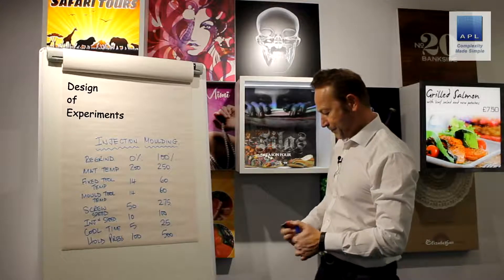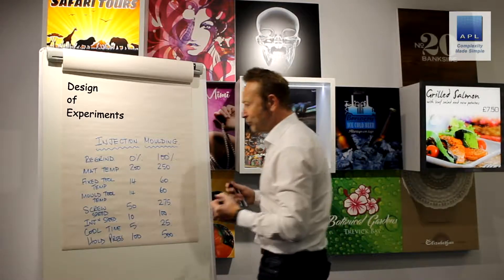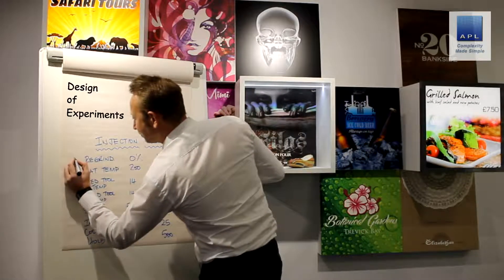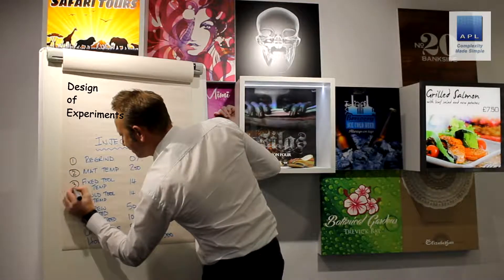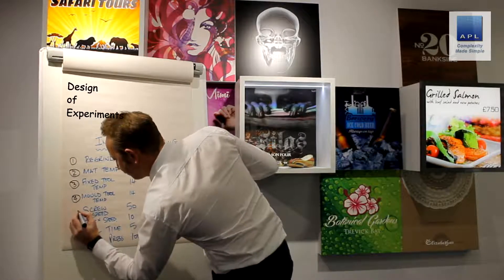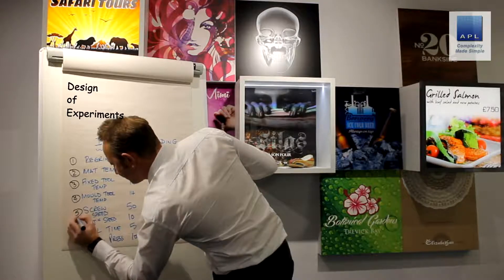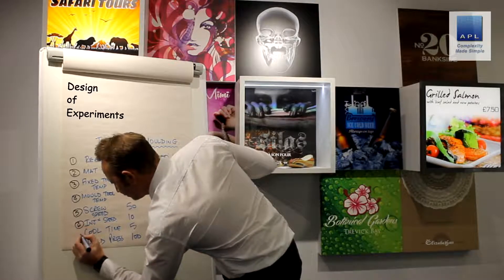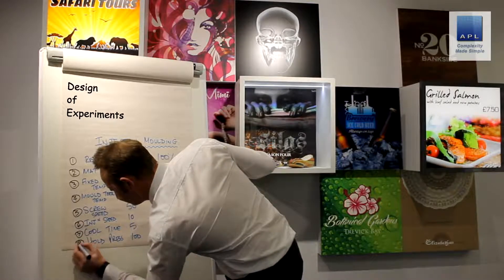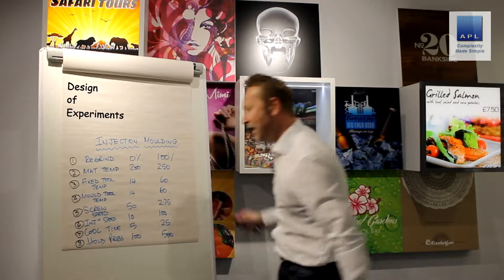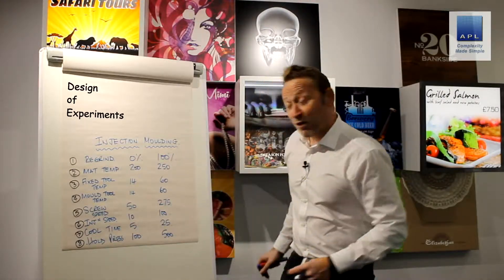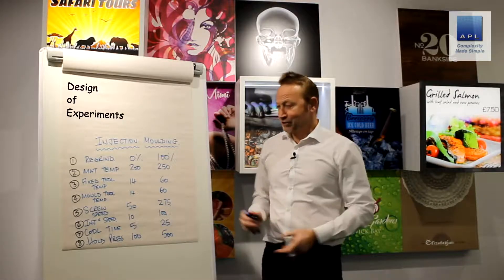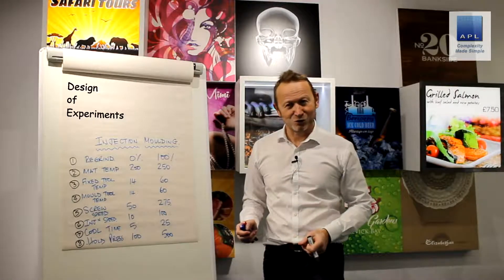How many dials is our technical person dealing with? One, two, three, four, five, six, seven, eight. So it's eight dials on the machine. He'll probably have this sorted out by lunchtime, I dare say, because it's only eight things to play with — not too tricky at all, is it?